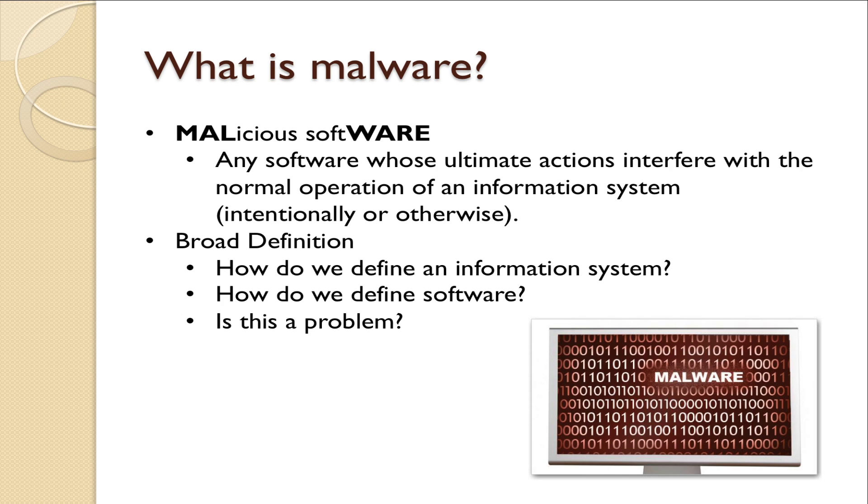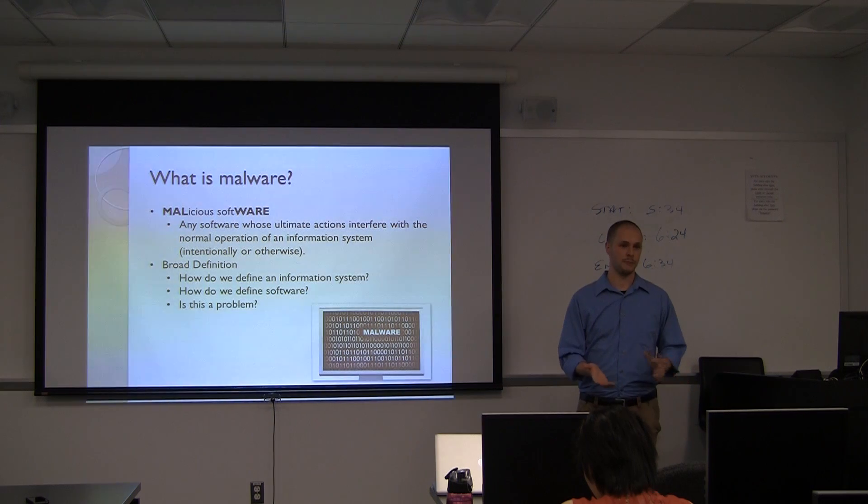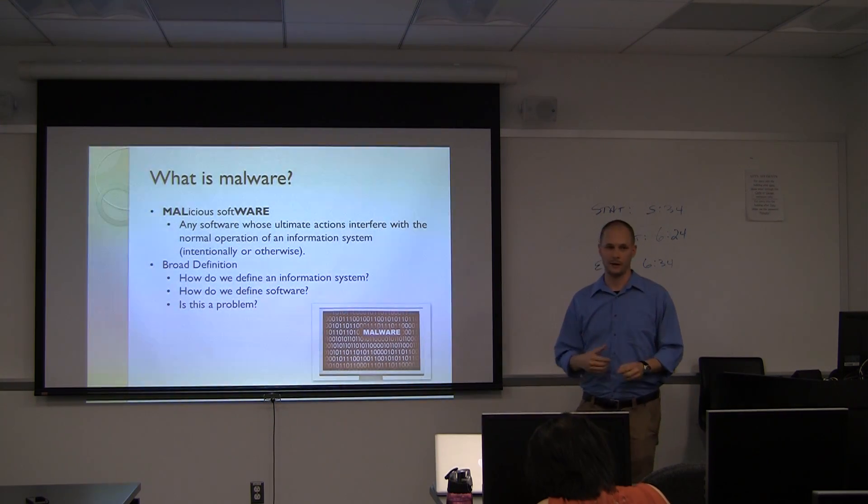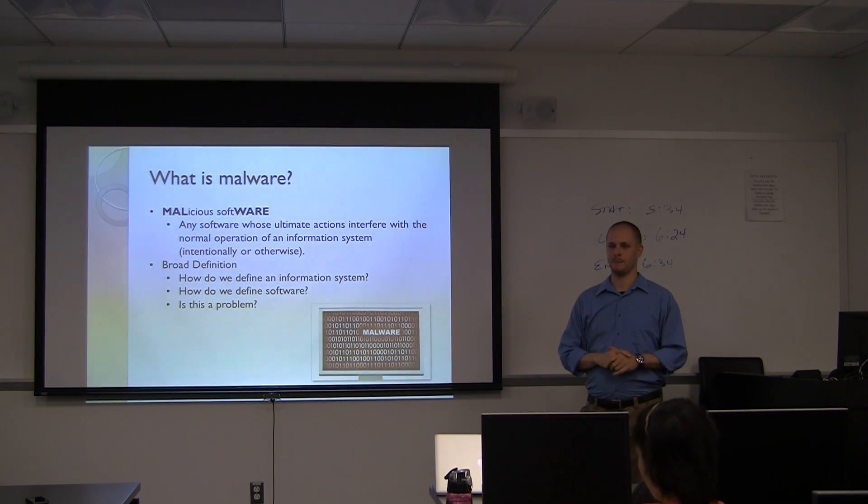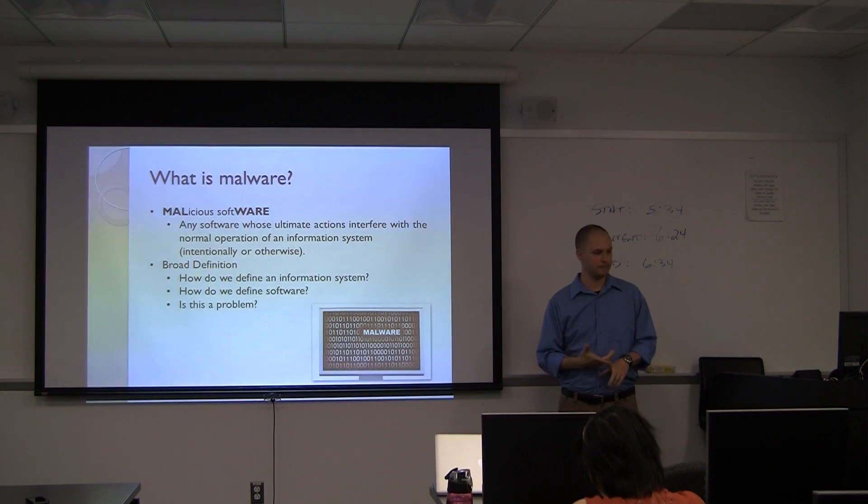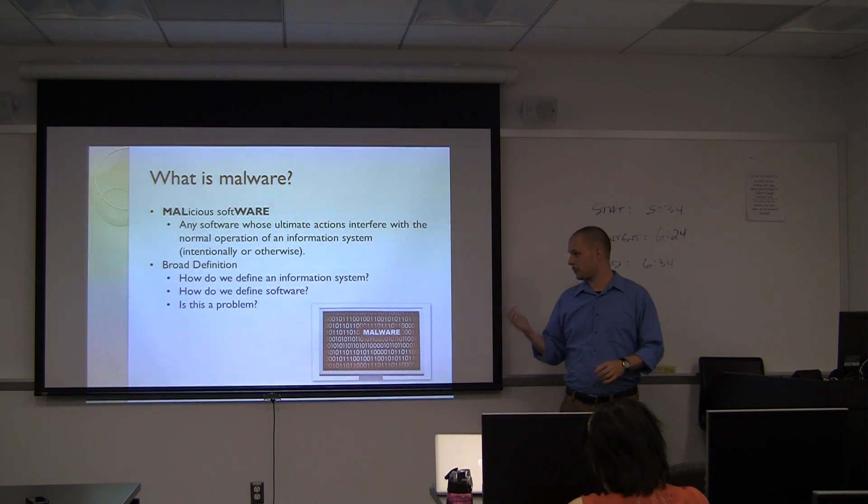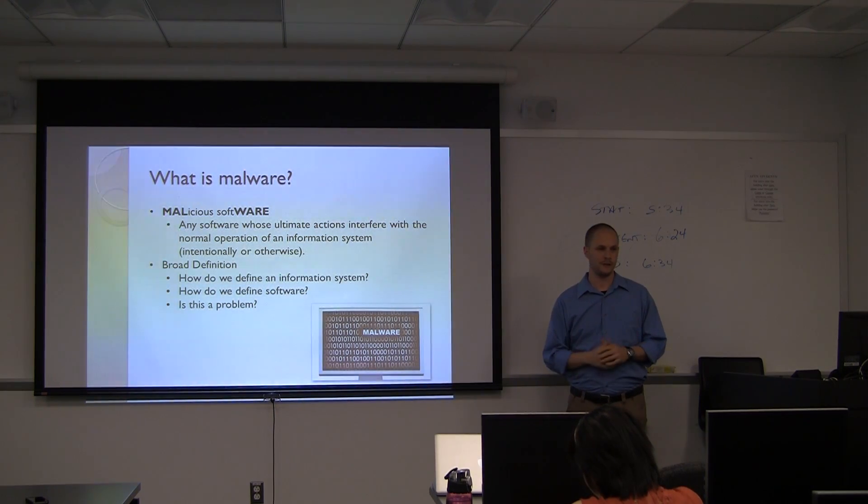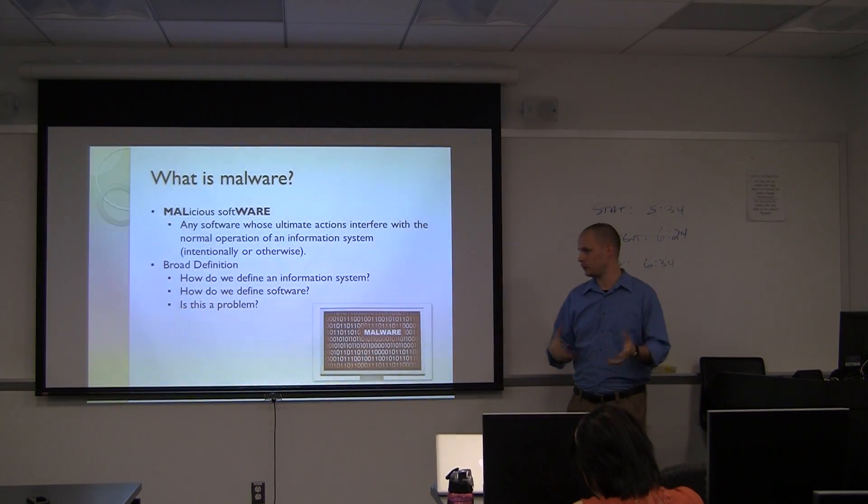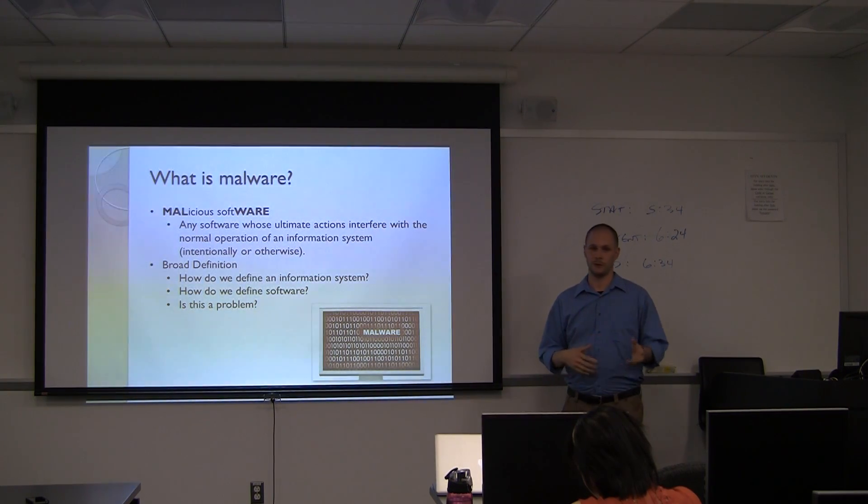So what is malware? Pretty much the definition is right there. Any software whose ultimate actions interfere with the normal operation of the information system intentionally or otherwise. And otherwise is important because it can be accidental. It doesn't have to be someone attacking your network. It can be someone who releases really crappy code. That happens quite a bit. It's a very broad definition, but it's that way on purpose. But if we look at that definition, we do have to ask these questions. How do we define an information system? How do we define software? And then is it a problem to have such a broad definition? For the most part, it's not. Your definition of information system can actually get quite broad depending on where you look. Essentially DNA can be considered an information system. So the broader you get, the more interesting things get, especially when you're talking about malware.